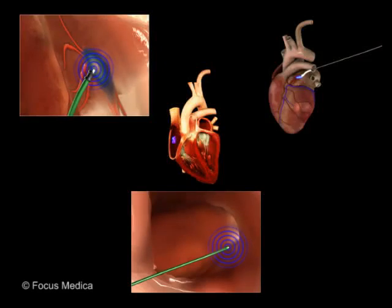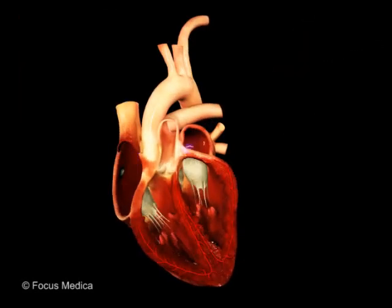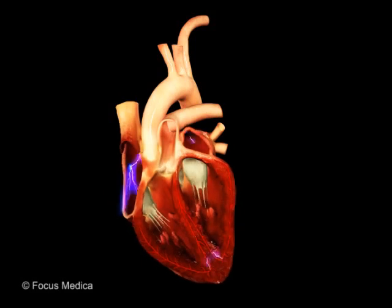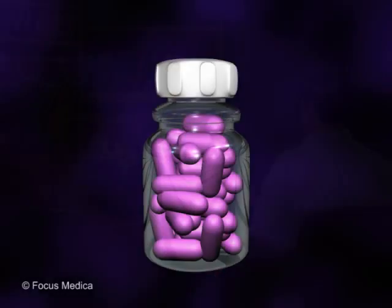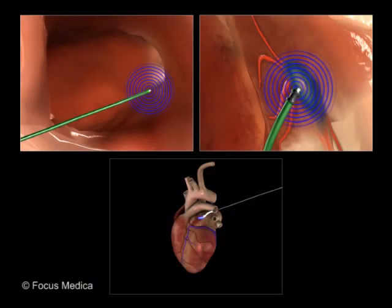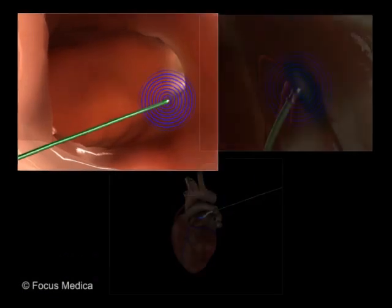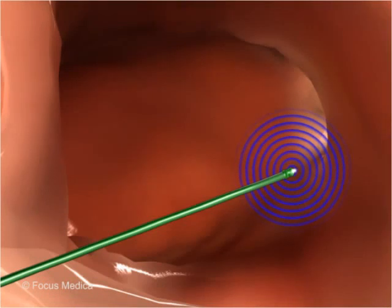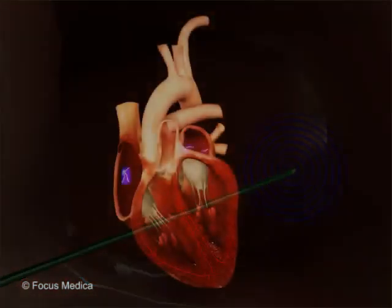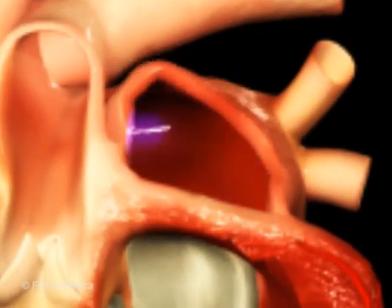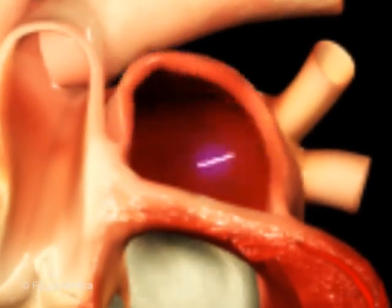Interventional therapy is recommended for atrial fibrillation when frequent episodes occur despite medication therapy. One such procedure is Pulmonary Vein Antrum Isolation. Most of the atrial fibrillation signals arise from the four pulmonary veins.